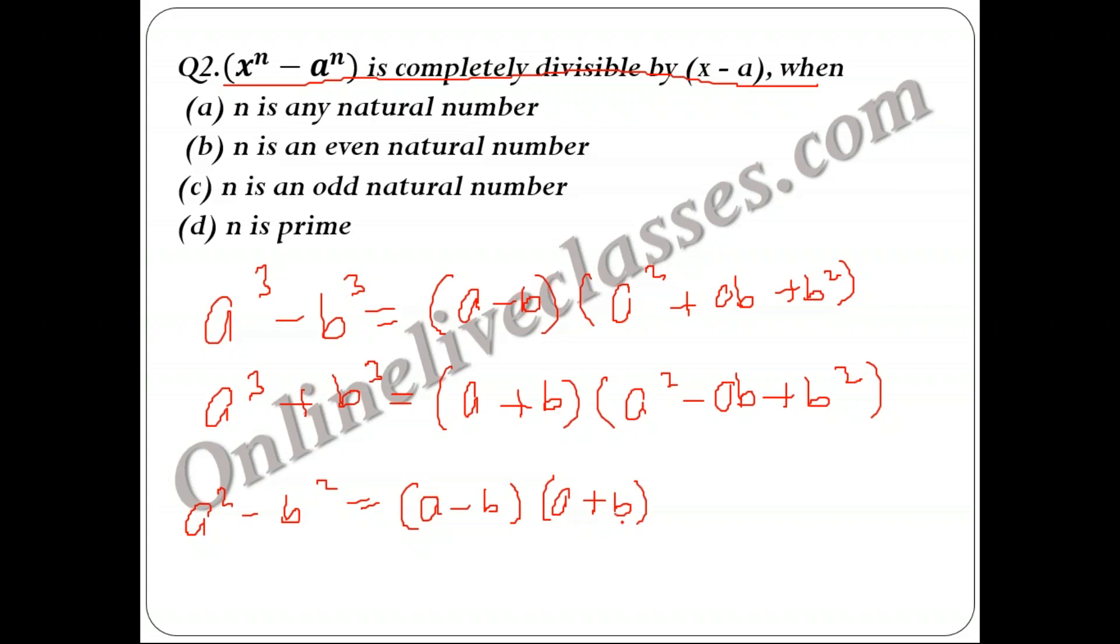Here it is written that x^n - a^n is divisible by x - a when... You can see that a³ - b³ is also divisible by a - b, and a² - b² is also divisible by a - b. So whether n is even or odd, in both cases it is divisible by a - b. Hence my answer becomes: when n is a natural number, because whatever you put in place of n, x^n - a^n will always be divisible by x - a.